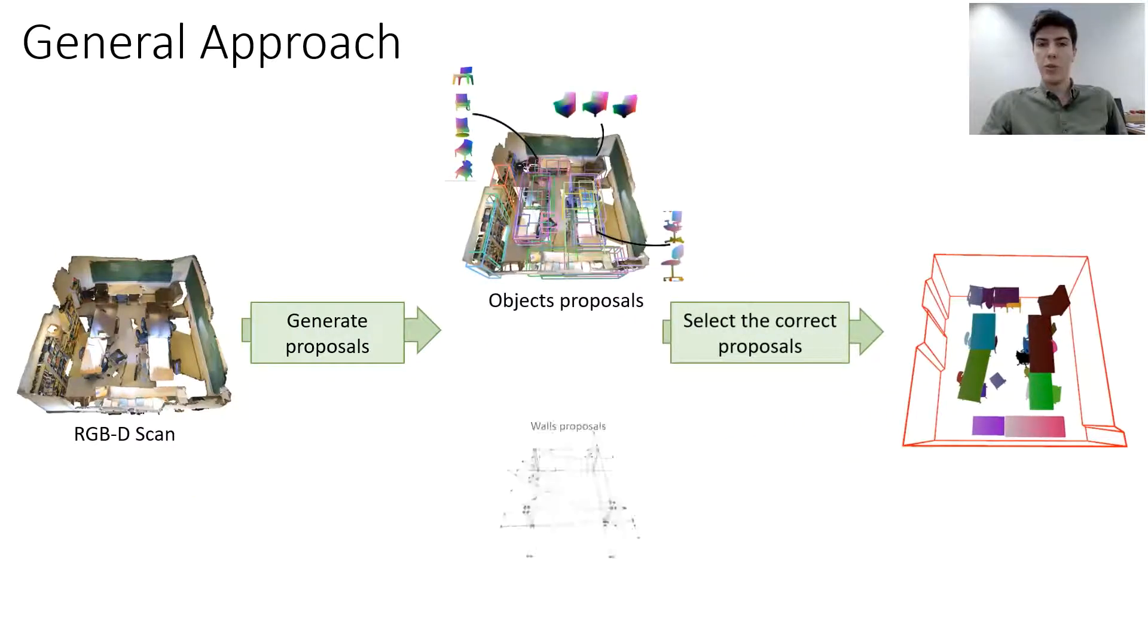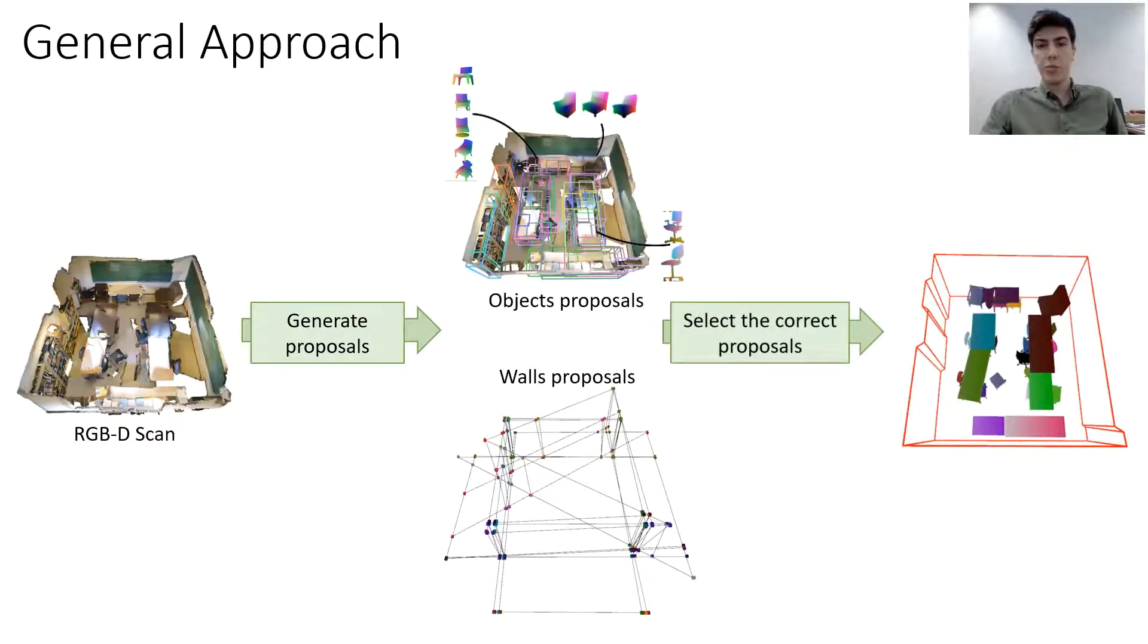In the first step of our approach, we detect candidate proposals for a given RGBD scan. More exactly, we generate a large number of possible object poses and their corresponding models. We also generate a large number of planar polygons that might correspond to the walls in the scene.